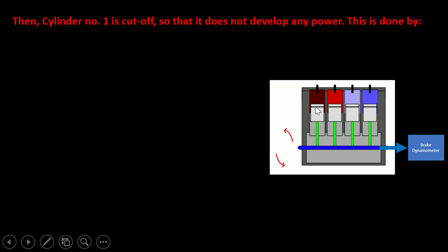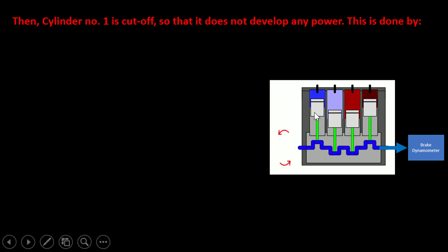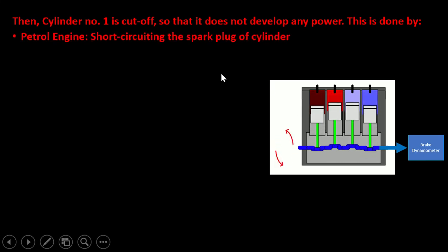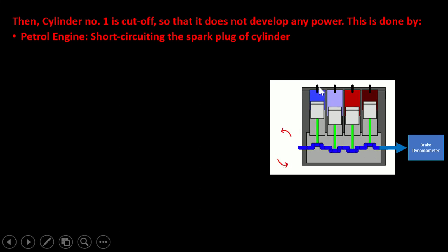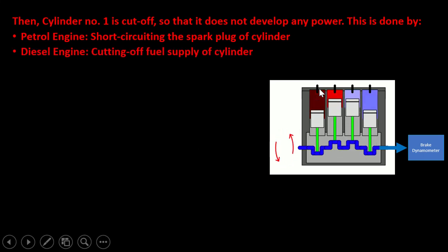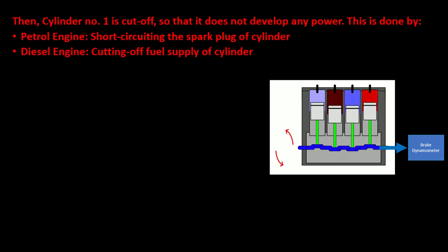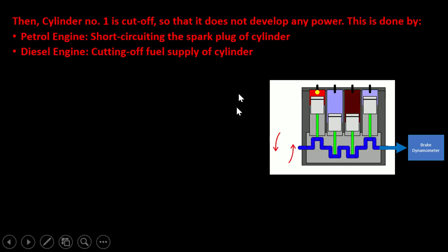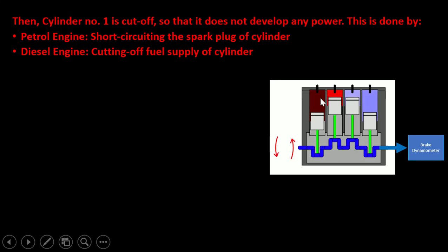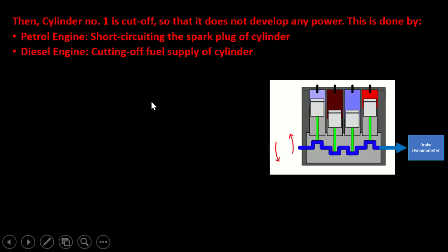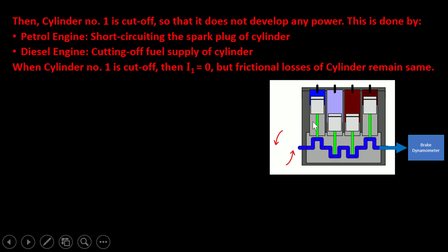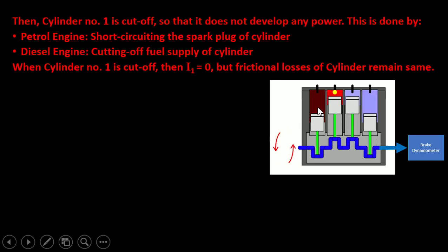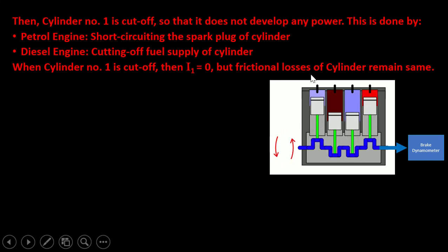First, we cut off cylinder 1 so that it does not develop any power. For a petrol engine, this is done by short-circuiting the spark plug of cylinder 1. For a diesel engine, we cut off the fuel supply of that cylinder. When cylinder number 1 is cut off, the indicated power for cylinder 1, I1, is equal to 0. But the frictional loss of the cylinder remains the same.